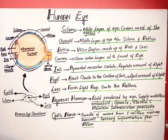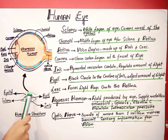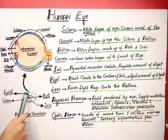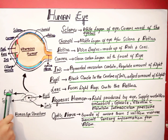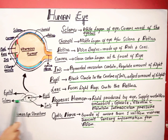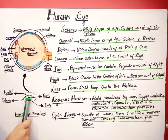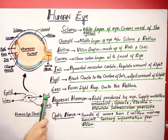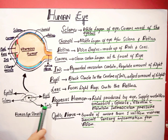Here we have a human eye diagram. In this diagram you can see the upper part is called the eyelid. The white part of our eye is called the sclera. The circular dot within our eye is called the pupil, and the colored portion of our eye is called the iris.